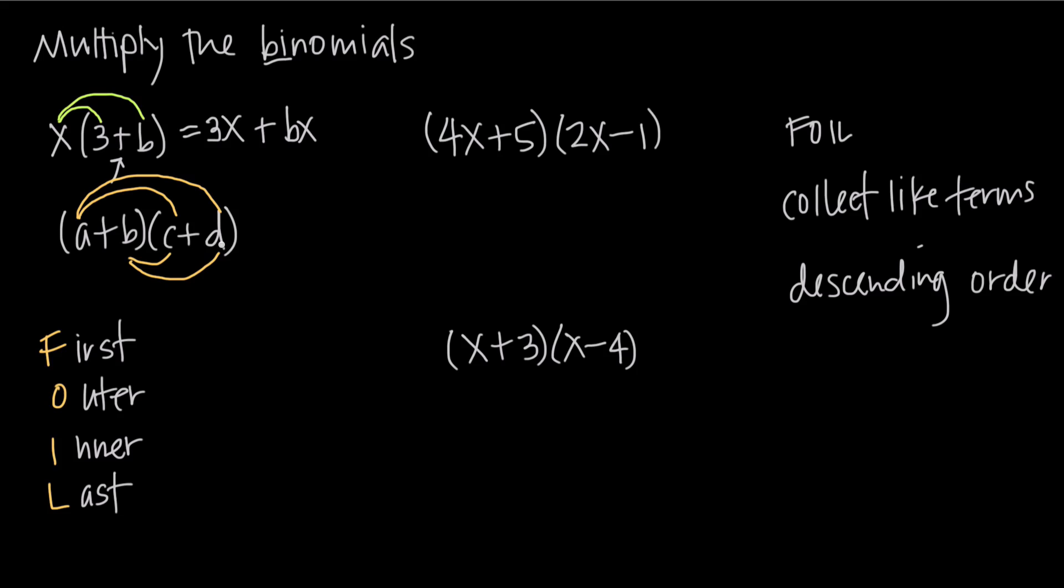So let's look at FOILing the multiplication of these two binomials. We're going to start with our first term, so a and c, a times c is ac. Then our outer terms, a positive a times a positive d is a positive ad. Then our inner terms, a positive b times a positive c is a positive bc. And then our last terms, b and d, a positive b and a positive d, plus bd. So that's how we FOIL out two binomials.